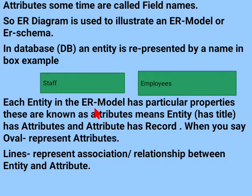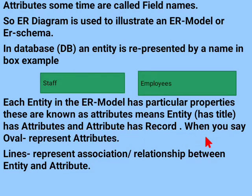Each entity in an Entity Relationship Model has a particular property. These are known as attributes — entity as title, attribute as record. When you represent an attribute, you also represent the association and relationship between entity and entity.